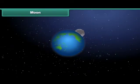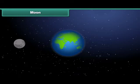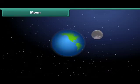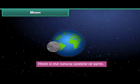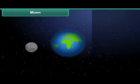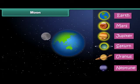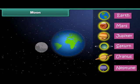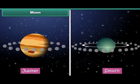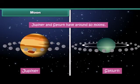A natural satellite is a celestial object that revolves around a planet. It is natural and not man-made. Moon is the natural satellite of Earth and it revolves around the Earth. Apart from Earth, Mars, Jupiter, Saturn, Uranus and Neptune are other planets that have moons. While Earth has only one moon, all other planets have more than one. Jupiter and Saturn have around 60 moons each.